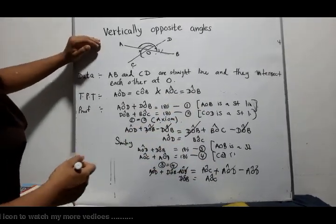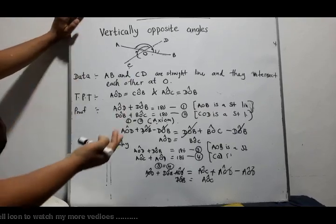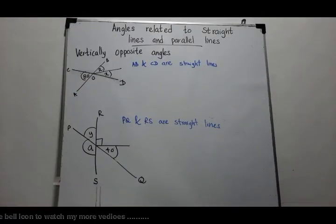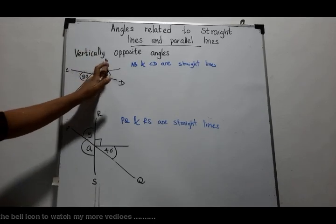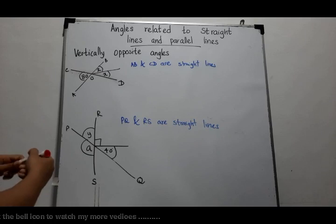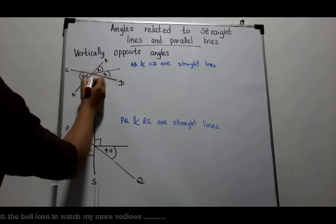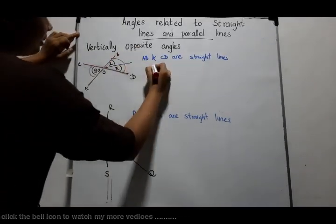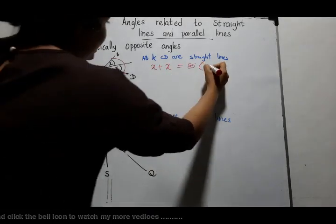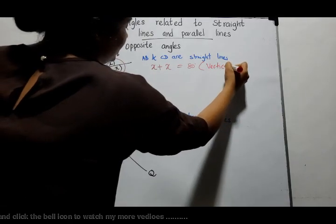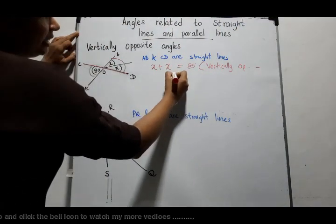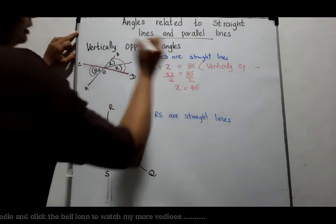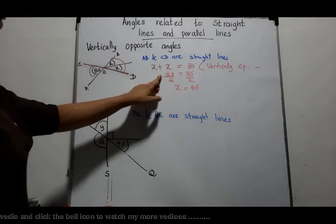To understand more about vertically opposite angles, let's do some examples. Here, AB and CD are straight lines intersecting at O. You have to find the magnitude of X. These are vertically opposite angles, so 2X equals 80 degrees. Reason: vertically opposite angles. Dividing by 2, X equals 40 degrees.